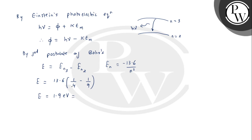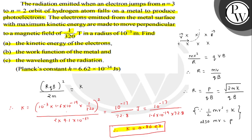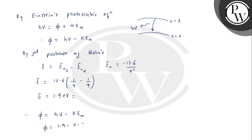This value of 1.9 eV equals hν, the energy of the photon. Substituting into Einstein's equation: φ = hν − K = 1.9 − 0.86 = 1.04 electron volts. This is the answer to the second part of the question.